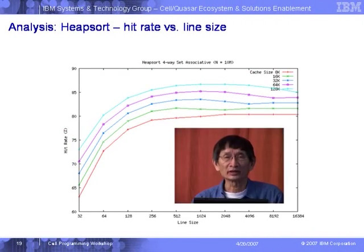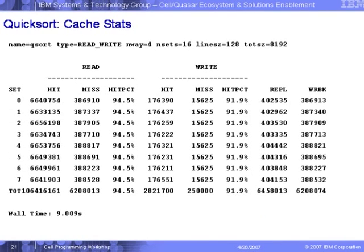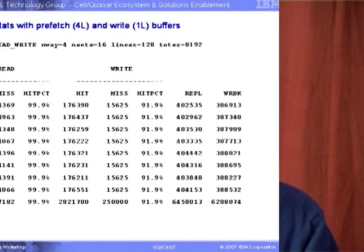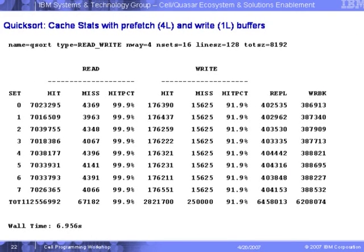This is the quicksort runtime versus line size and hit rate versus line size for heapsort as well. Heapsort behaves more or less based on the cache size similarly. The hit rate jumps between about 76-77% and 80-something percent. Runtime versus line size and set size — with two sets, organizing cache lines by sets — differences between 8 sets, 7, or 1 or 2 are small. The hit percentage is almost the same: about 94% or 91% based on the write type.